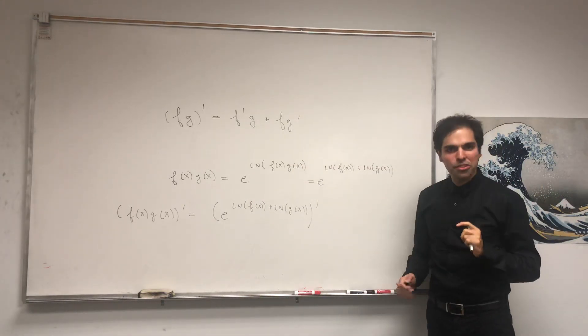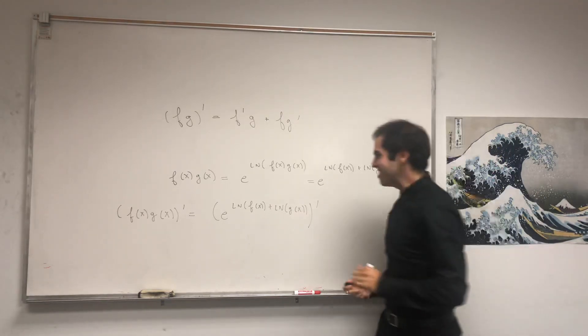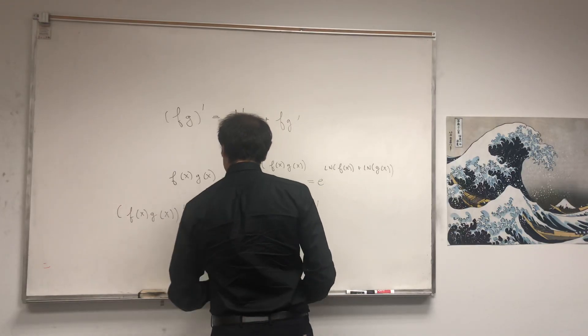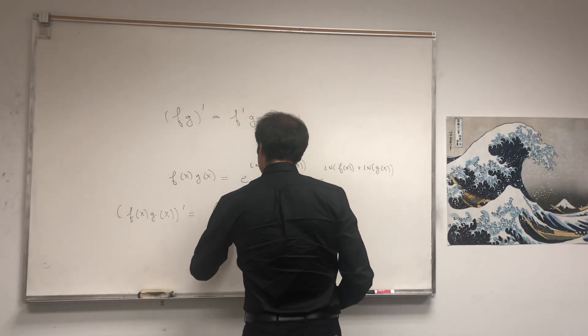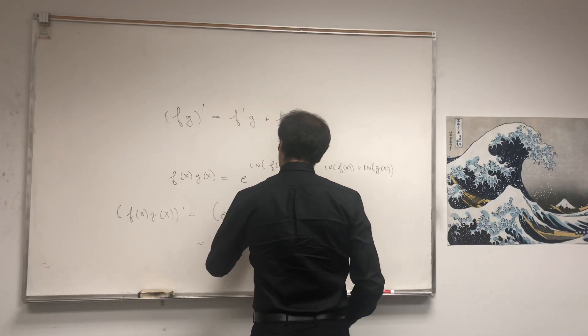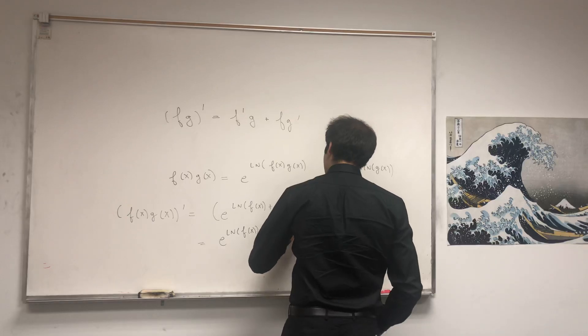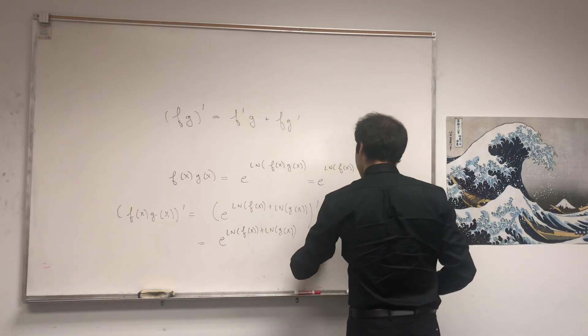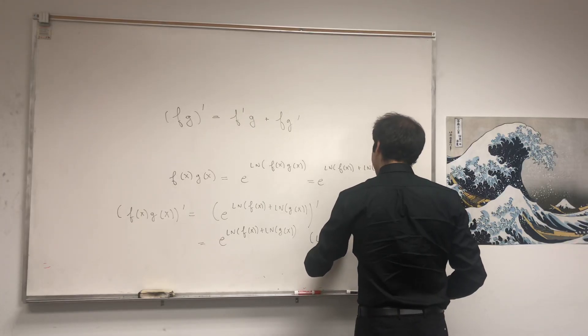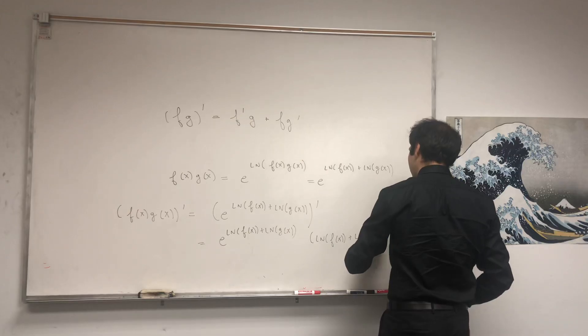We're not allowed to use the product rule, but we can use the chain rule. So use the chain rule. What we get is e to this thing, ln of f of x plus ln of g of x, times the derivative of the inside. So ln of f of x plus ln of g of x prime.